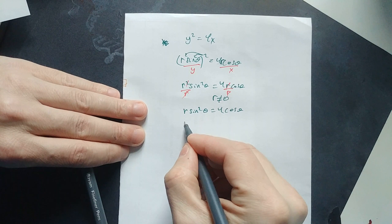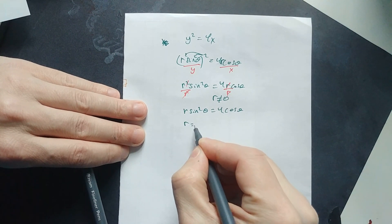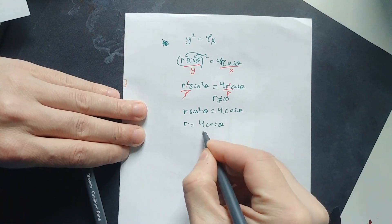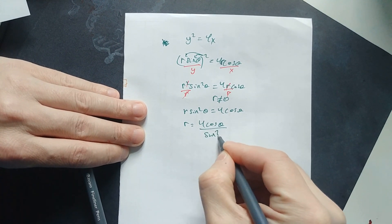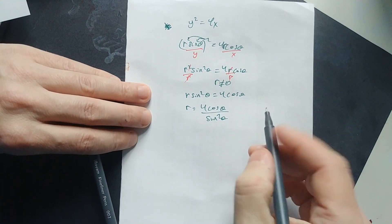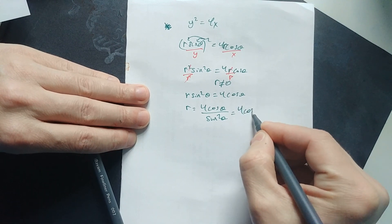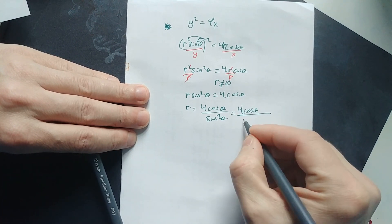Divide both sides by sin² θ, so r = 4 cos θ / sin² θ. The basic thing we do here is we rewrite this as 4 cos θ and then write the sin² θ as sin θ times another sin θ this way.